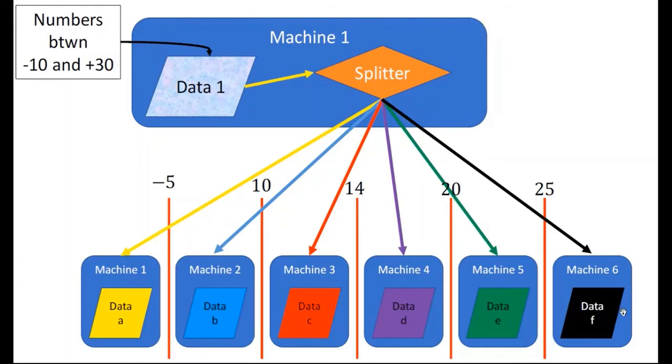Now I need to split this data into the intermediate structures, and for that I have selected some pivot elements: -5, 10, 14, 20, and 25.